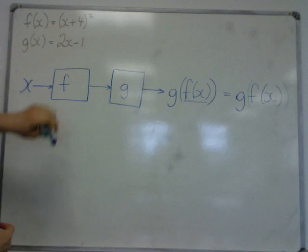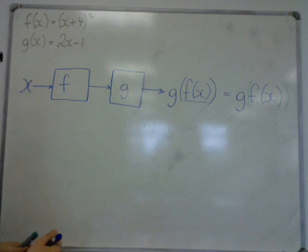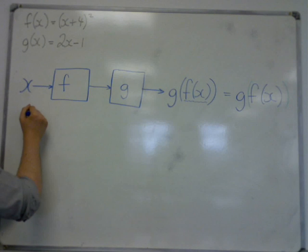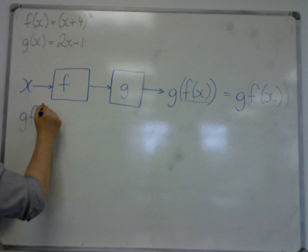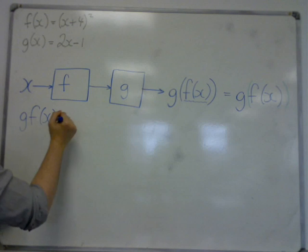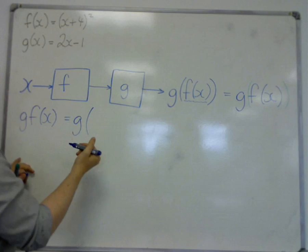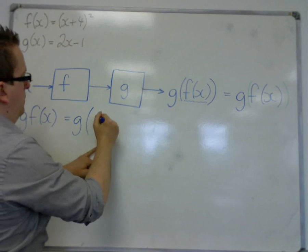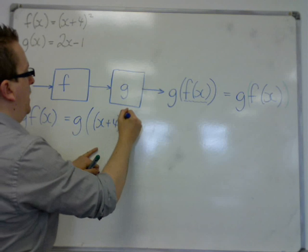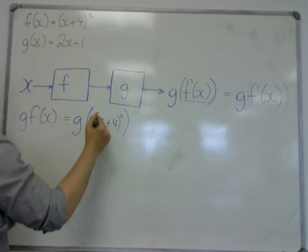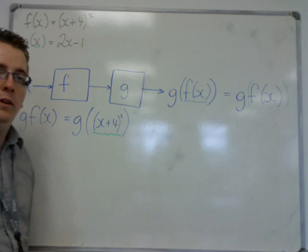Let's say we started off with these two functions: f is x plus 4 squared and g is 2x minus 1. Then we could look at gf of x. Well that's f of x going into g, so that's g of f, which is x plus 4 squared. So the x in g of x has been replaced with x plus 4 squared.